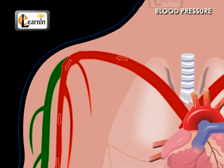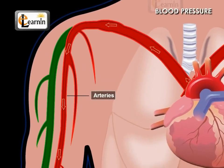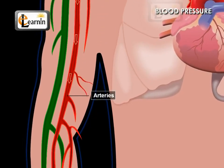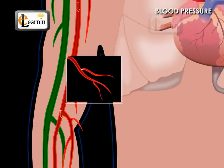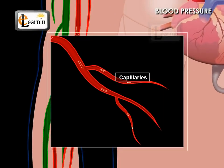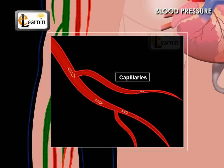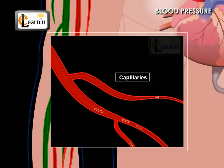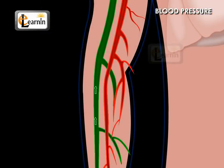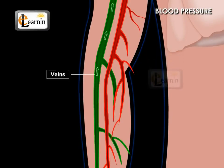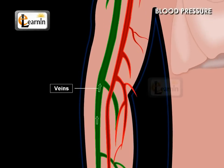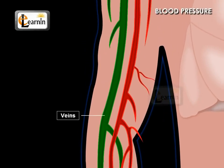Arteries receive blood from the heart, so blood pressure is higher in the arteries. The blood pressure gradually decreases as blood flows into capillaries. When this blood is collected into veins, blood pressure is greatly reduced. So blood pressure is less in the veins when compared to the arteries.